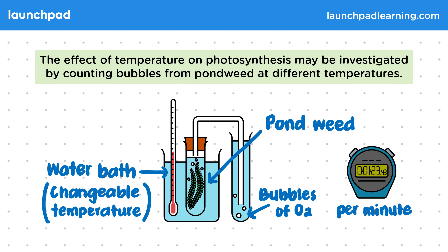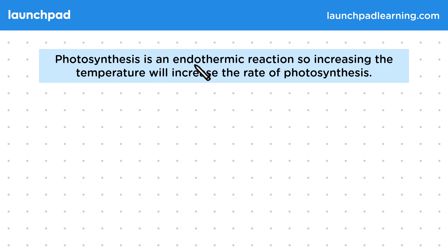What type of graph can we expect to see from this investigation? Photosynthesis is an endothermic reaction, so increasing the temperature will increase the rate of photosynthesis.